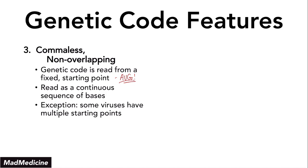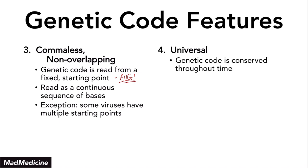The last thing you need to know about your genetic code is that it is universal. The genetic code is conserved throughout time — it is found in every single human being and the majority of genes are coded by more or less the same nitrogenous bases. The only exception is the mitochondria in humans. Mitochondria can have variations because they are passed down only from the mother, and are essentially derived from prokaryotic cells that were incorporated intracellularly.